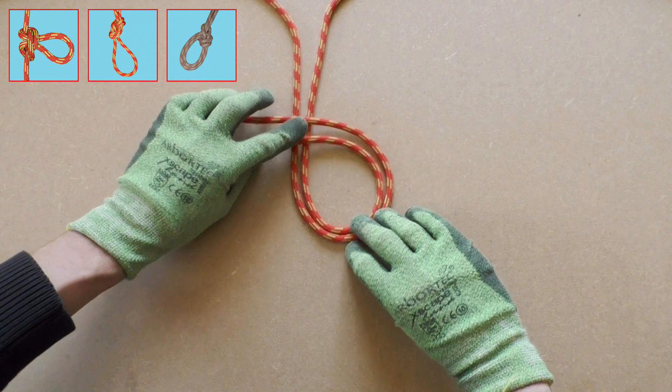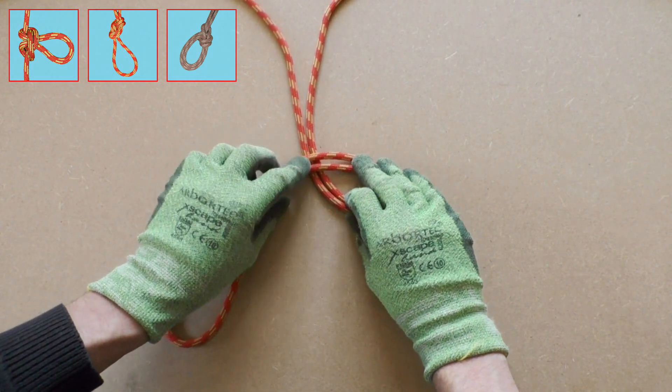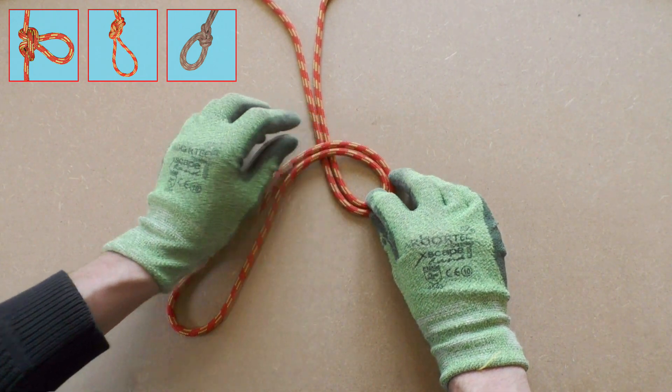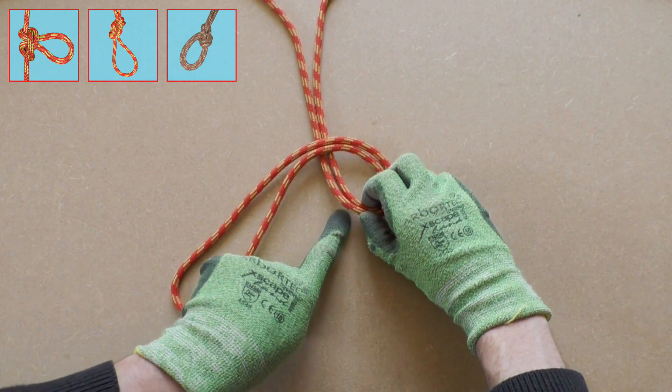Take the working end then bring it over the standing part of the rope to form a loop. The next step we will take for tying the bowline on a bite is putting the working end through the loop from below.